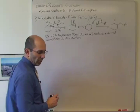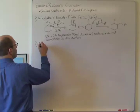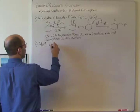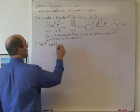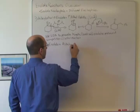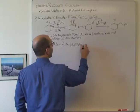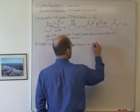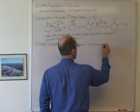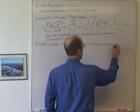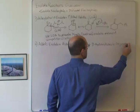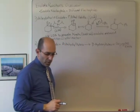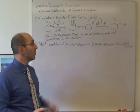That's number one — alkylation. Now let's do number two: the aldol reaction. In the aldol, we have an enolate plus an aldehyde or a ketone, and that's going to generate either a beta-hydroxy ketone or a conjugated enone depending on the conditions.